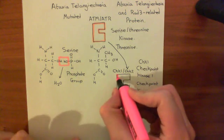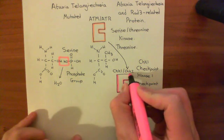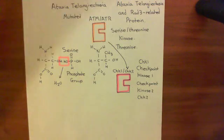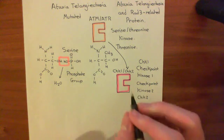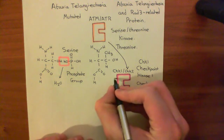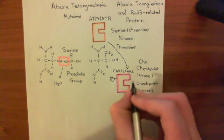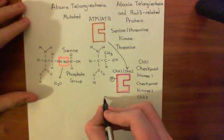This CHK1/CHK2 enzyme is going to be phosphorylated by the active ataxia telangiectasia mutated protein or the ataxia telangiectasia and RAD3-related protein. When they are phosphorylated, they themselves become activated. CHK1/CHK2 has been phosphorylated by ATM/ATR and now it's active.